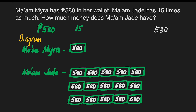580 times 15. First, we multiply by 5: 0 times 5 is 0; 8 times 5 is 40 — write 0, carry 4 to the top of 5; 5 times 5 is 25, plus 4 is 29.